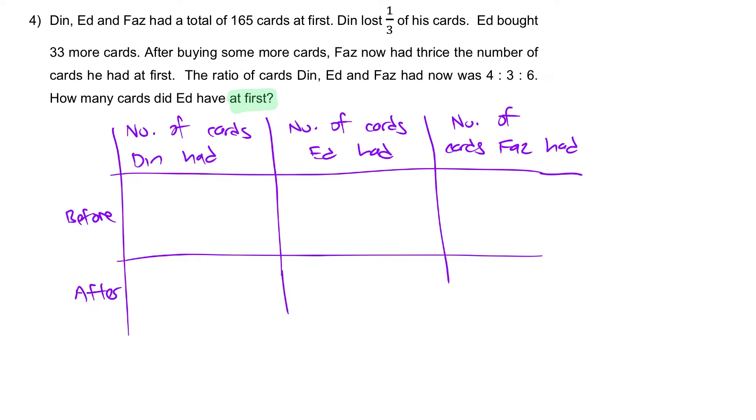What is the ratio at the end? The ratio at the end is 4 is to 3 is to 6. This is the ratio they had at the end. Let's work our way backwards. At the end, Fuzz now had thrice the number of cards he had at first. So, if this is after you had thrice, what is the one before? You must divide by 3 to get 2 units.